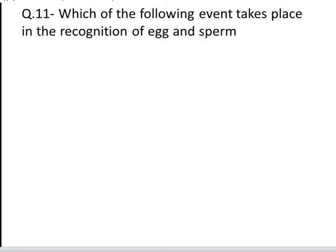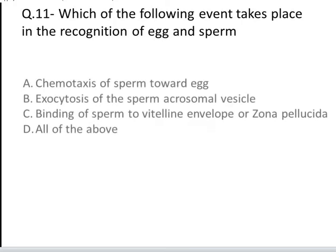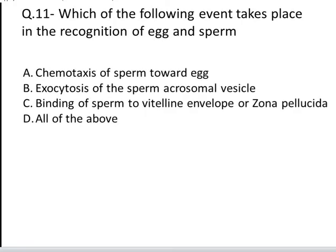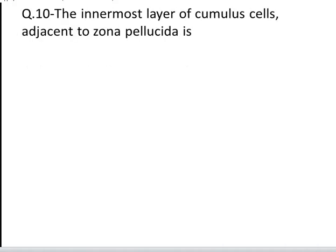The next question is: which of the following events takes place in the recognition of egg and sperm? These are four options: A. Chemotaxis of sperm to egg, B. Exocytosis of sperm acrosomal vesicle, C. Binding of sperm to vitelline layer or zona pellucida, and D. All of the above. Yes, the answer is D, all of the above.